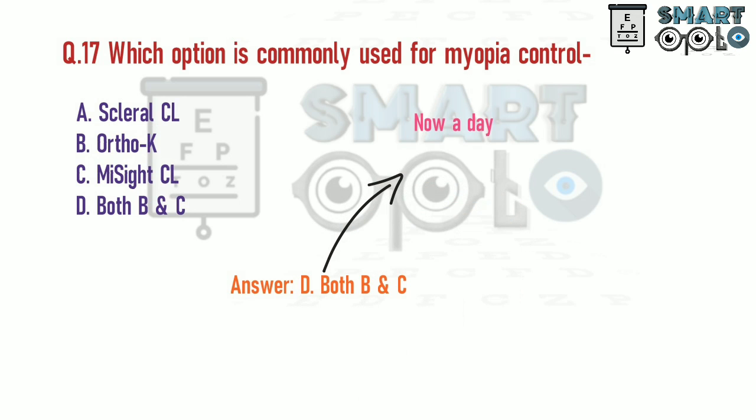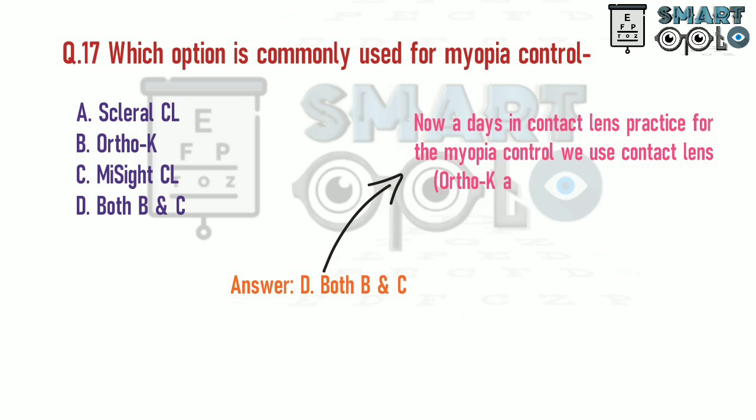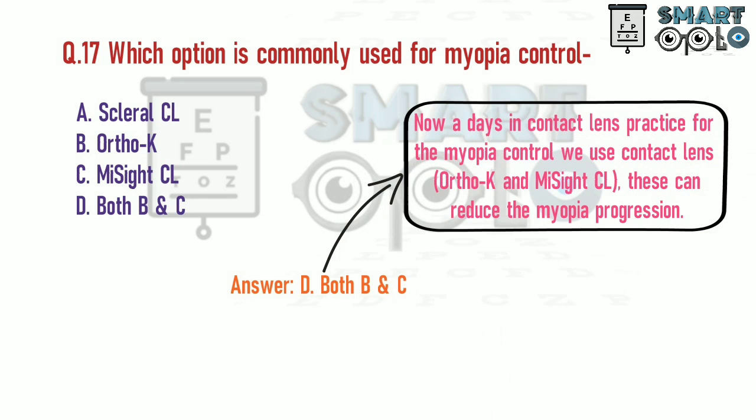Nowadays in contact lens practice, for myopia control, we use contact lenses such as ortho-K and multifocal contact lenses. These can reduce myopia progression.